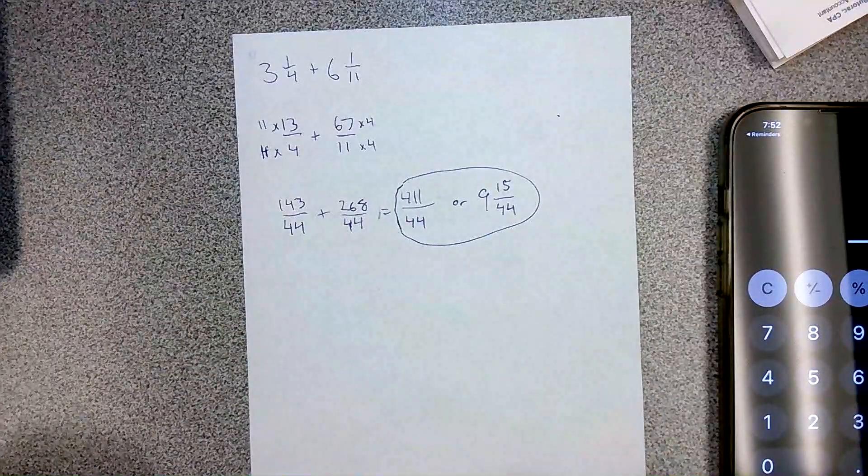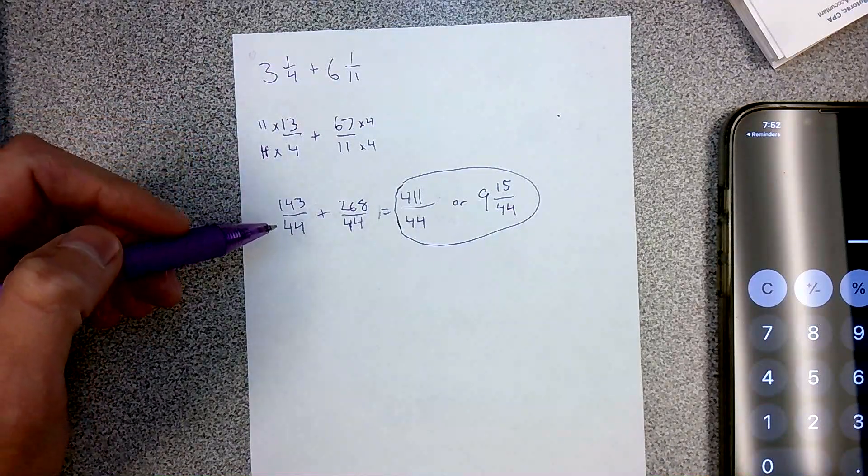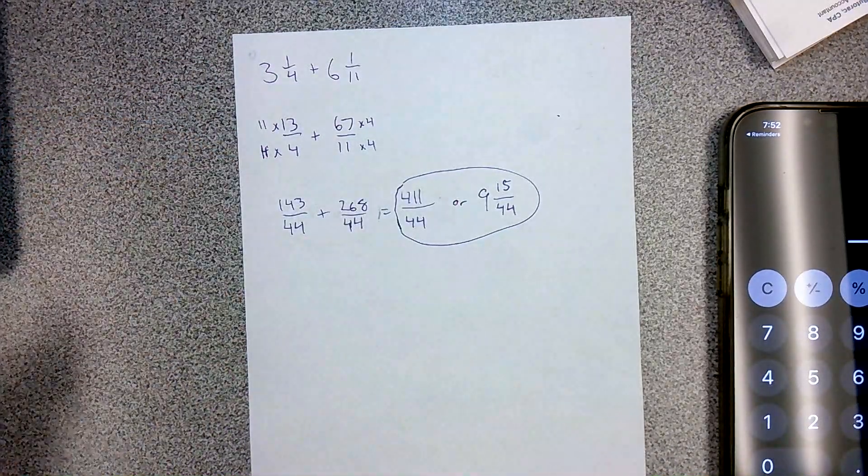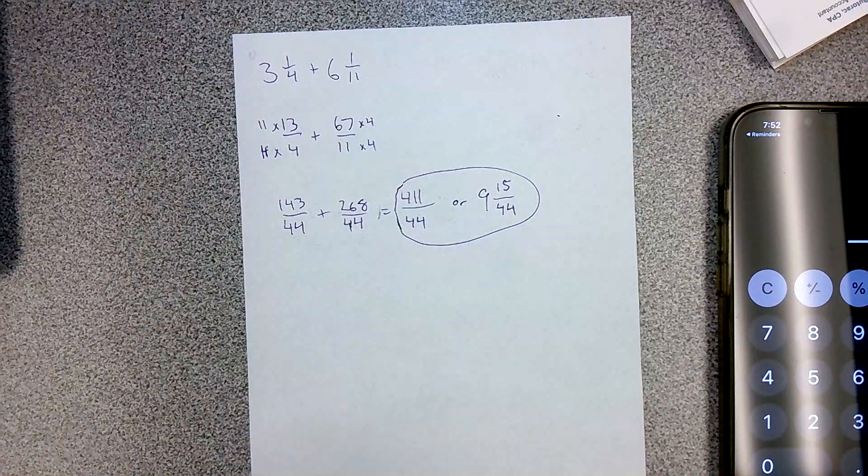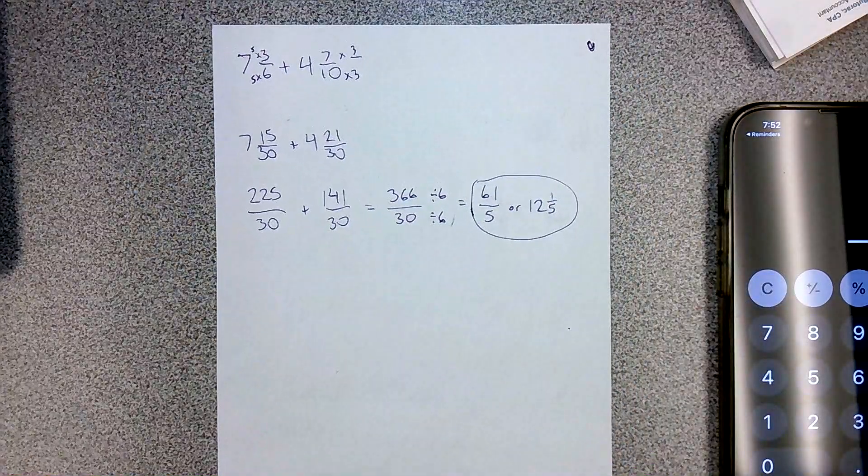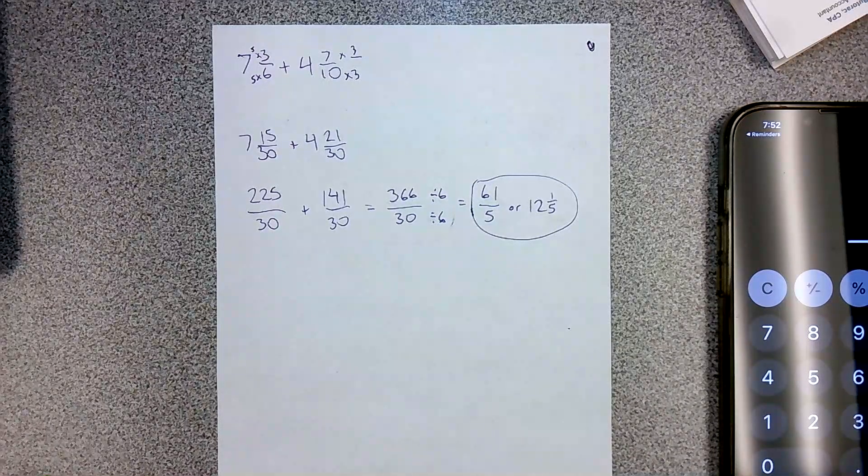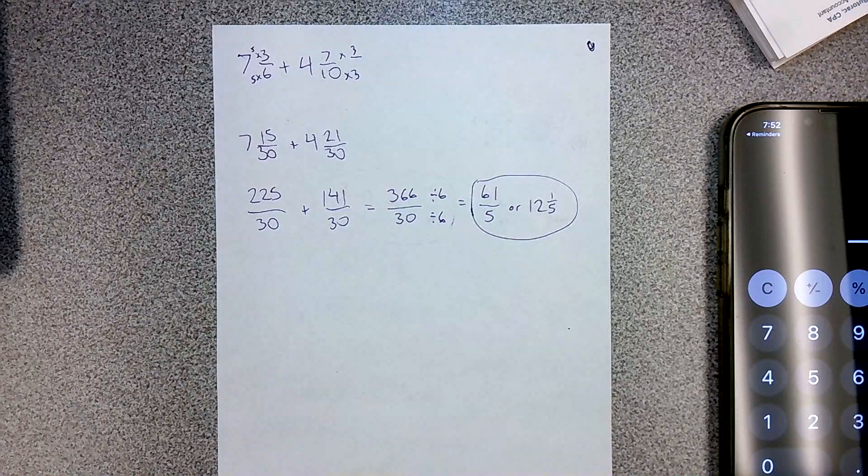Hopefully that helps in terms of getting those common denominators, changing to improper fractions, and then finding the answer from there. If you have any questions or any follow-up, there are other ways. I mentioned that there were a couple things here that I just didn't do. There are multiple ways to do the problem. If you have a different way that you prefer, and you want to know if it will always work, please let me know, and I'll help you.